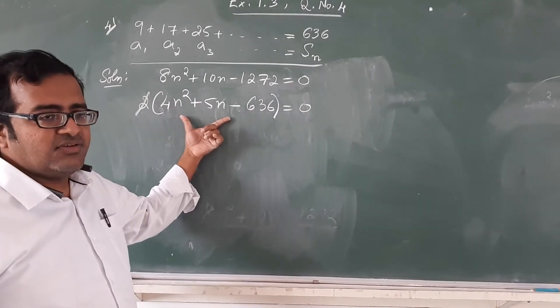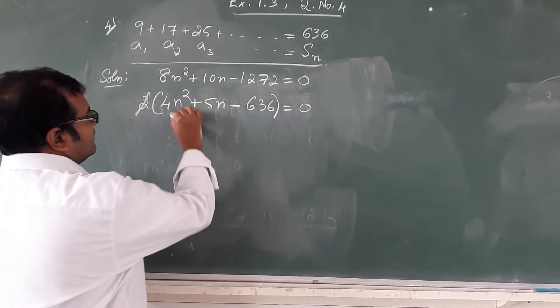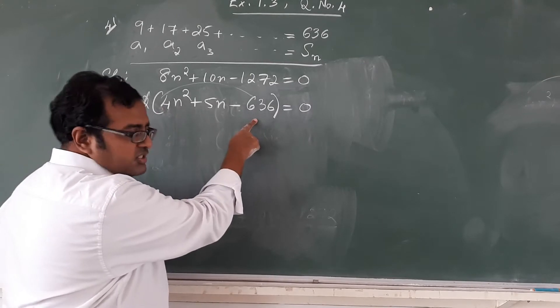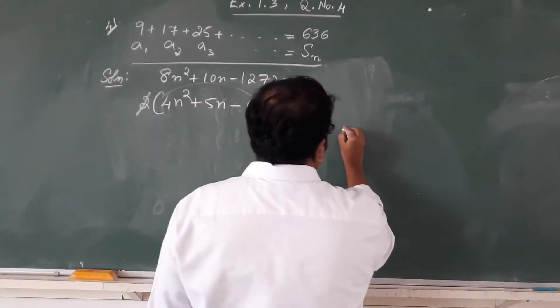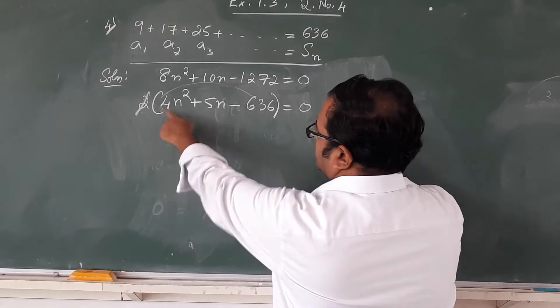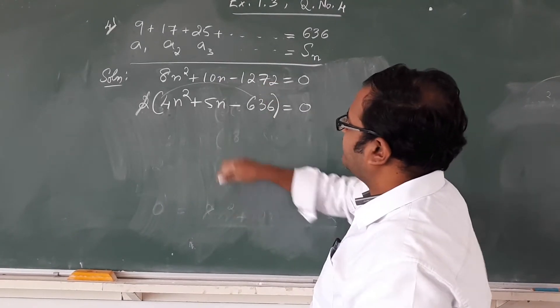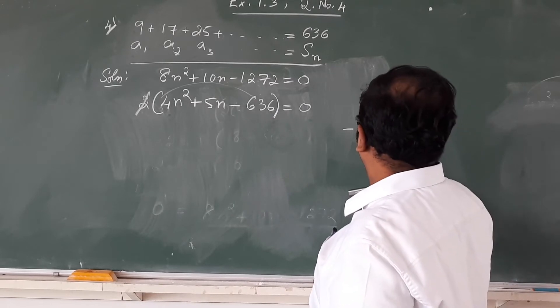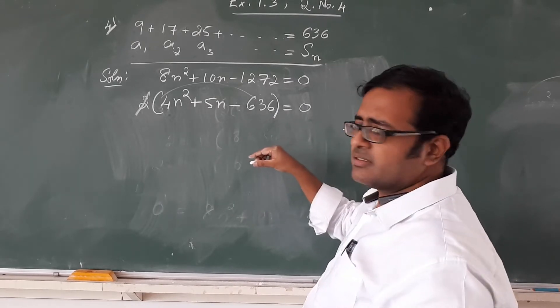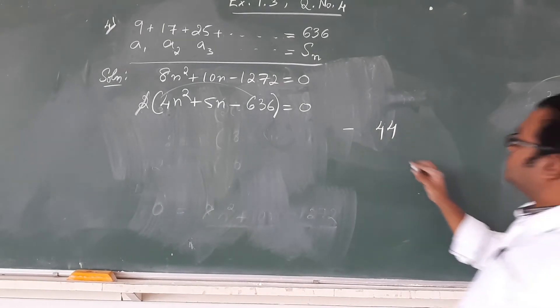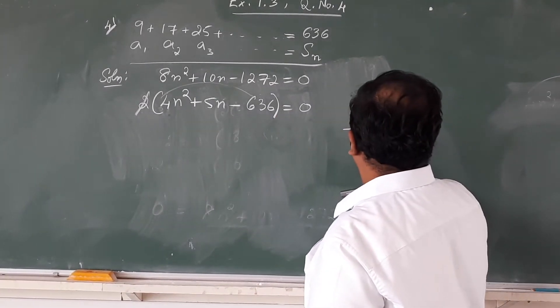Now let us factorize this given equation. For factorizing the given equation, if we multiply the first and the last coefficient, the coefficient and the constant, we get 4 times 636. So we get a product of minus 2544.